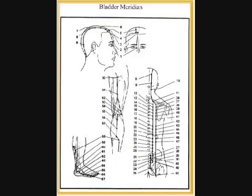UB38: numbness of the gluteal region, numbness of the femoral region, contracture of the tendons in the popliteal fossa. UB39: stiffness and pain of the lower back, distension and fullness of the lower abdomen, edema, dysuria, cramp of the leg, cramp of the foot. UB40: lower back pain, motor impairment of the hip joint, contracture of the tendons in the popliteal fossa.